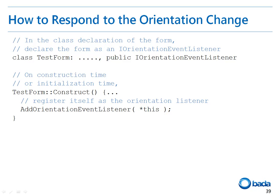First, to make the Form react to a change in the orientation of the terminal, you have to set the Form as a subclass of the IOrientationEventListener. Then, you need to register this object in the construct function of the Form by using the OrientationEventListener of the Form.